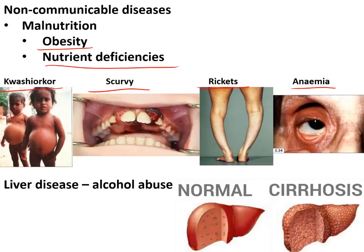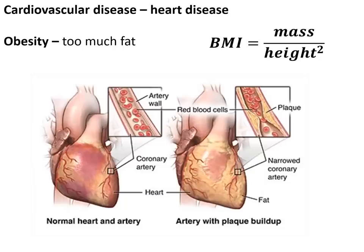Another non-communicable disease is liver disease caused by alcohol abuse, properly known as cirrhosis. It is a permanent breakdown of the liver — once you have it, it cannot be cured. Cardiovascular disease is another type of non-communicable disease, with obesity being the biggest risk factor. Obesity is defined as having a body mass index of 30 or more, calculated as mass divided by height squared.